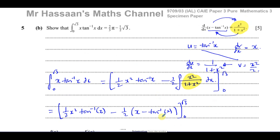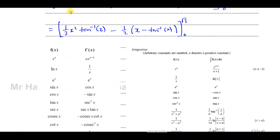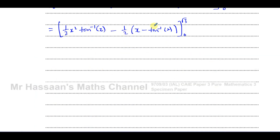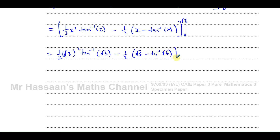Substituting the limits: when we put in root 3, we compute the expression. When we put in 0, x squared becomes 0, inverse tan of 0 is 0, so every term at the lower limit is 0. Therefore the lower limit contributes nothing and we are left only with the upper limit terms.